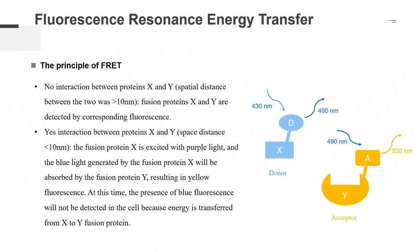When there is no interaction between proteins X and Y, or the spatial distance between the two is greater than 10 nanometers, fusion proteins X and Y are detected by their corresponding fluorescence. If there is an interaction between proteins X and Y, or the spatial distance between the two is less than 10 nanometers, the fusion protein X is excited with purple light, and the blue light generated by fusion protein X will be absorbed by fusion protein Y, resulting in yellow fluorescence. At this time, blue fluorescence will not be detected in the cell, because energy is transferred from the X fusion protein to the Y fusion protein.